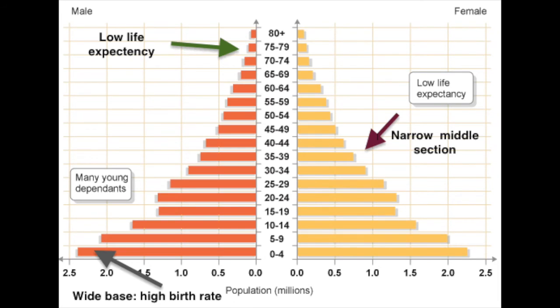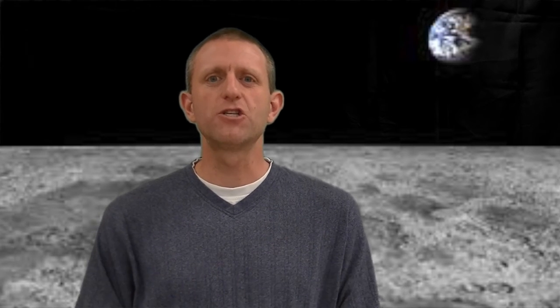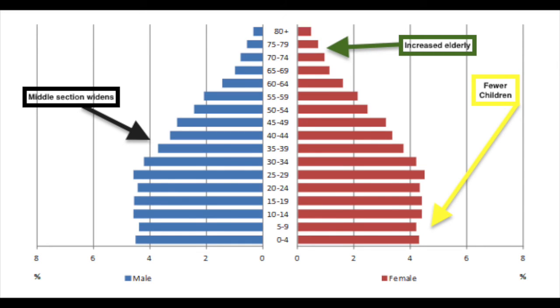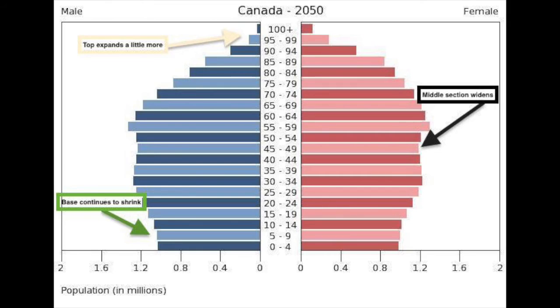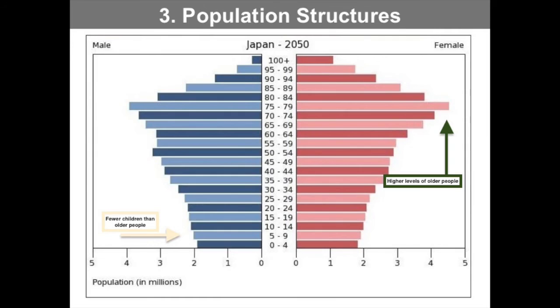When we compare population pyramids to the demographic transition model: in stage one, the pyramid is very steep with a very wide base and narrower middle. At stage two, the middle starts to fatten as life expectancy increases. At stage three, a rectangular shape starts to take hold as life expectancy continues to rise and birth rates begin to lower. In stage four, we really see the rectangular shape, with people living longer and fewer children being born. In stage five — the phantom stage — we see the reverse Christmas tree or cup shape: a very small base but a very wide top as older populations grow and fewer children are born.